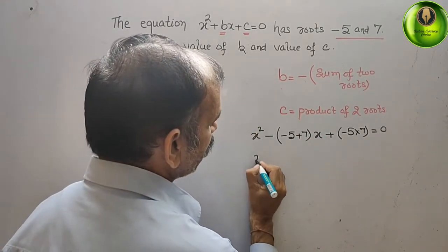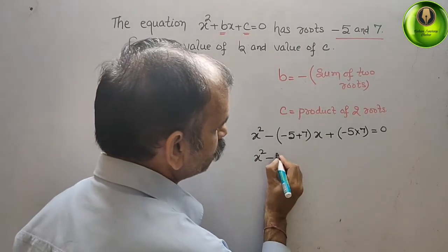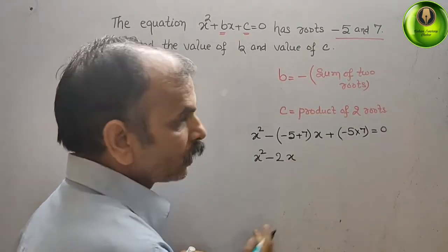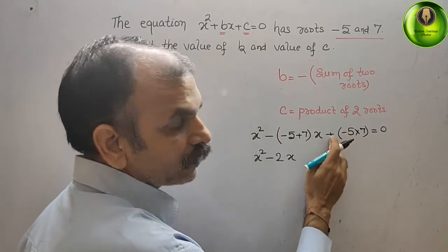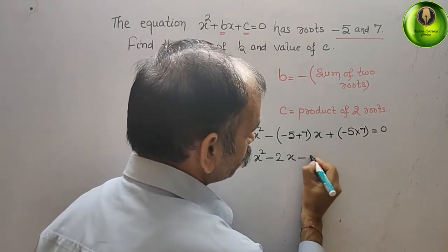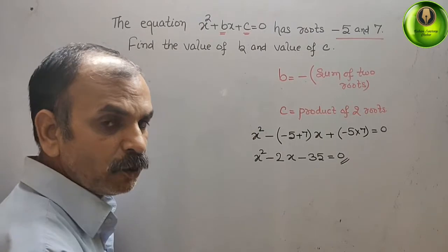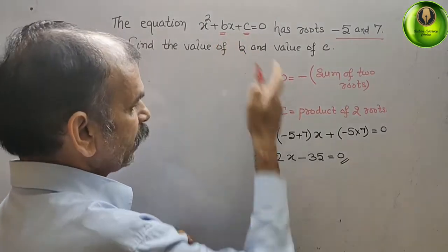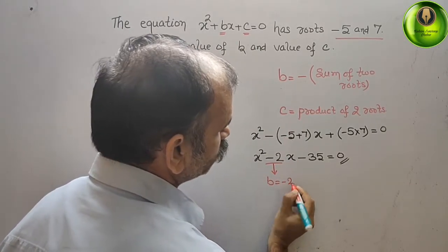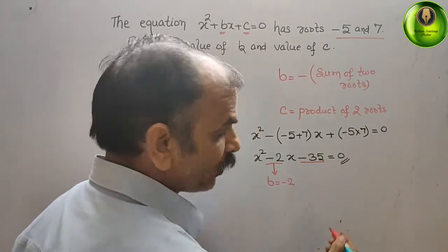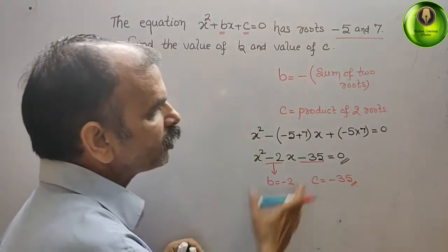Now solve this. You will get x squared — minus 5 plus 7 is 2, that means minus 2x. Here minus 5 into 7 is 35, and minus plus plus gives minus 35. That gives you 0. Now this is your equation. So b is equal to minus 2 and c is equal to minus 35. This is your shortcut method.